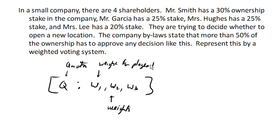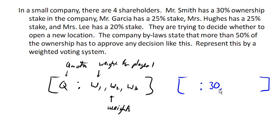In our particular election, we have to decide how we're going to assign weights to people. The easiest way to do that here is to use the percentages. We'll start with Mr. Smith as our first player and give him 30 votes — 30% of the vote, pretending it's 30 votes. Mr. Garcia then gets 25 votes, Mrs. Hughes 25 votes, and Mrs. Lee gets 20 votes.